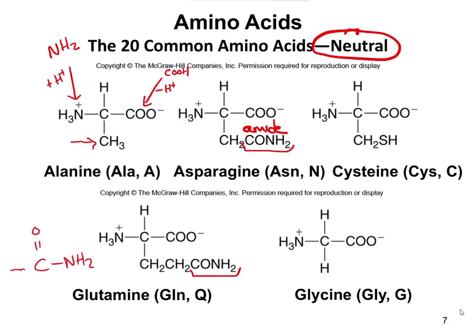Glycine has just an H as its side chain. An important amino acid is cysteine, which has an SH group. Because of that SH, cysteine can form what we call a disulfide bond. The sulfur is where the 'sulfide' comes from. Cysteine is the only amino acid that can form disulfide bonds, so whenever you hear 'disulfide bond,' think cysteine.